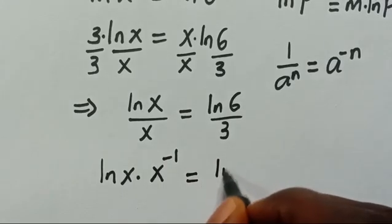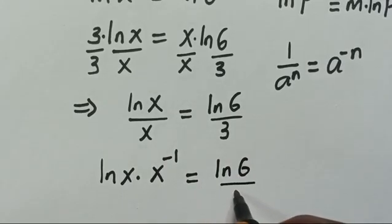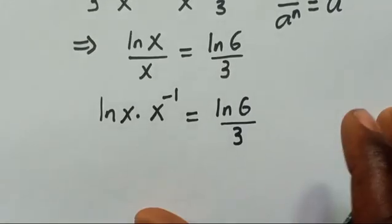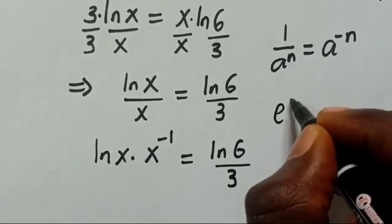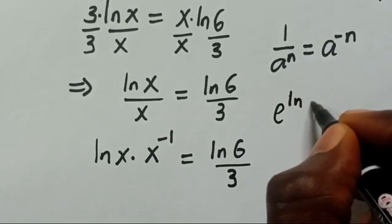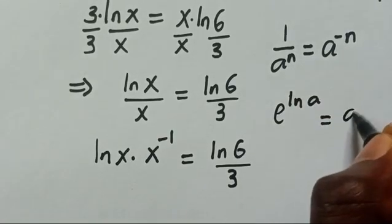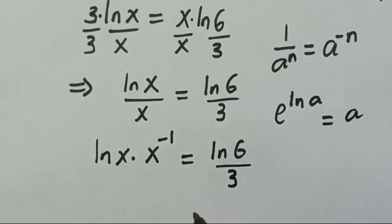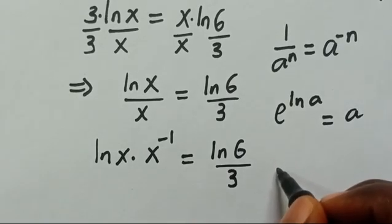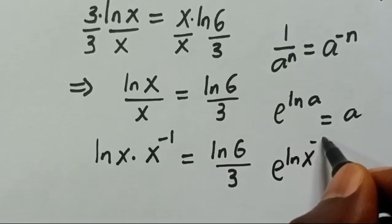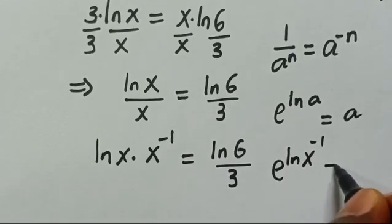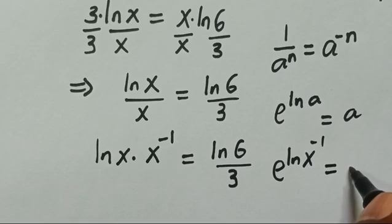This equals ln(6) divided by 3. Also note the identity: e to the power of ln(a) equals a. So e to the power of ln(x) to the power of minus 1 gives us x to the power of minus 1.